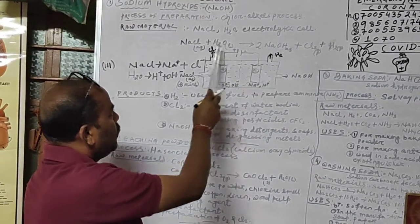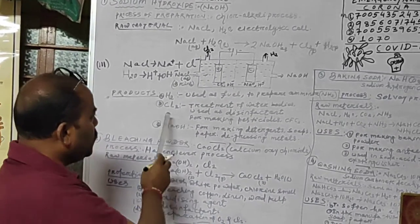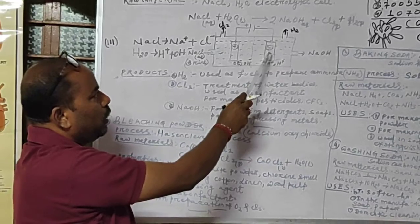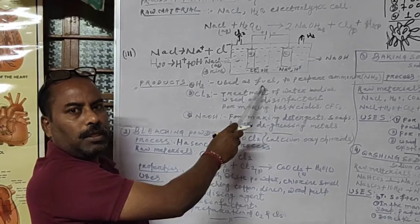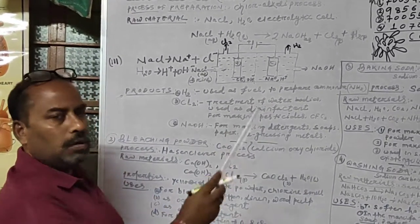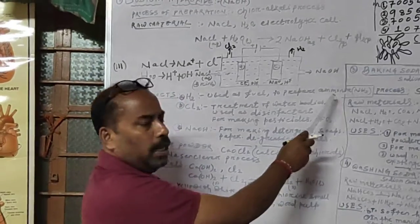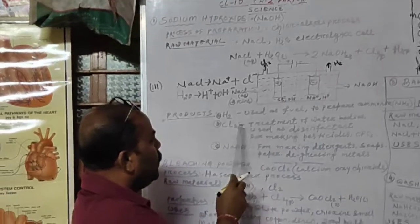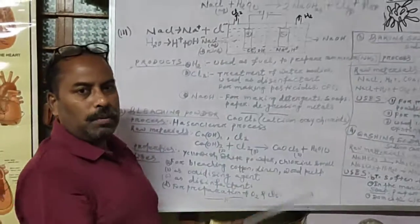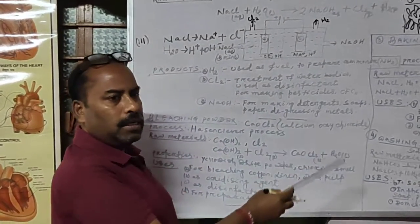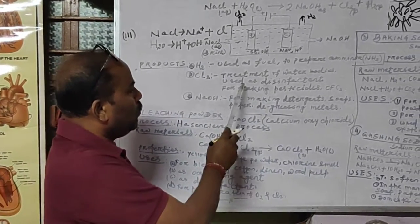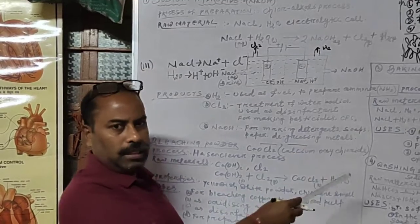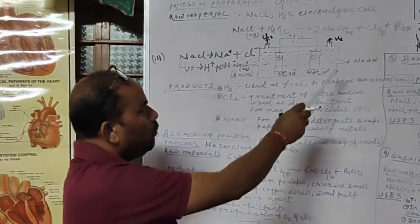Hydrogen gas is liberated at the cathode and is used as industrial fuel due to its high calorific value, and also for ammonia (NH₃) preparation in the fertilizer industry. Chlorine gas is liberated at the anode and is used for treatment of water bodies like swimming pools and tanks, as a disinfectant, and for making pesticides and CFCs.